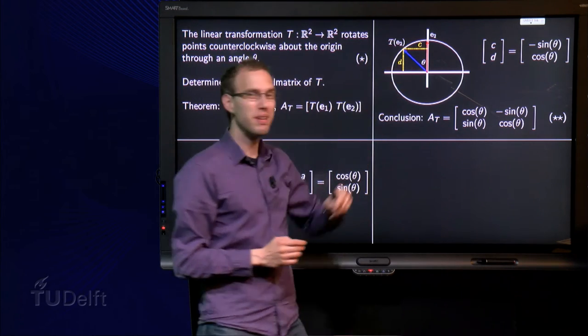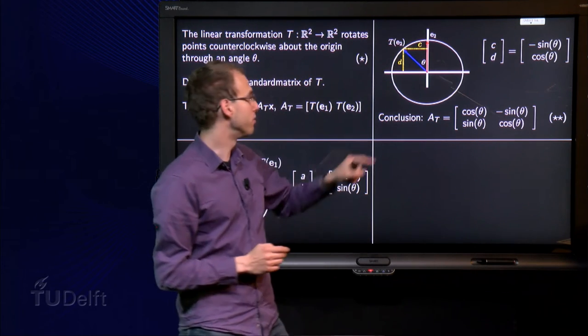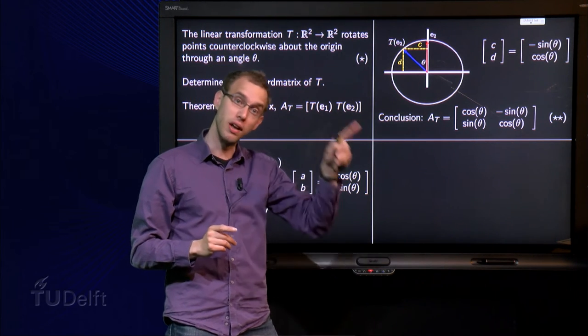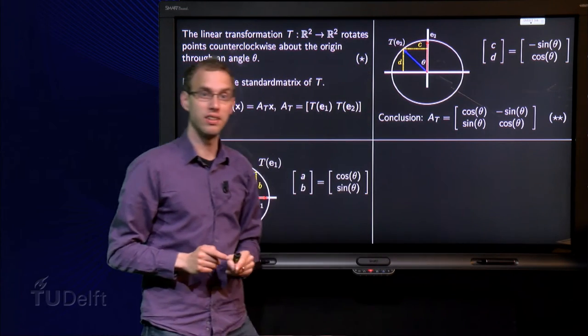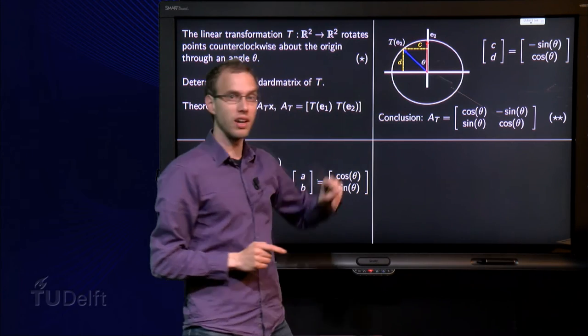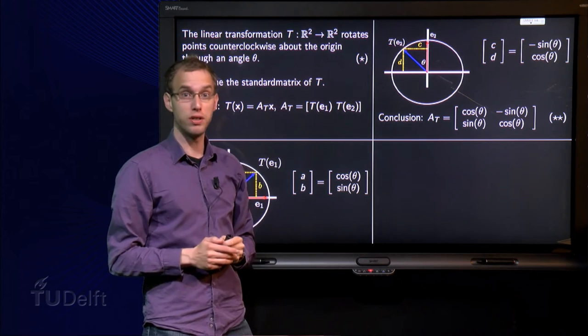Now here we have to be a bit careful. The sine of θ equals the size of C over 1, so the length of C equals sine θ, but we go to the left, so we go to minus sine θ. So the image of this point over here equals minus sine θ and cosine θ up. So that's T(e₂).